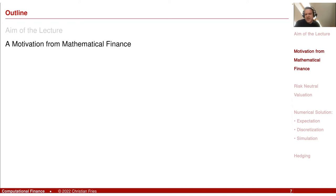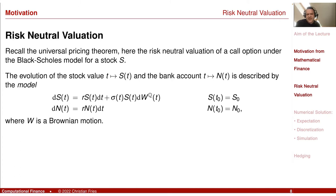Let me give a short motivation from mathematical finance. The lecture discusses numerical methods useful in other areas, but it's good to have some application in mind, because then you have an interpretation for these objects. The classical one is risk neutral valuation, sometimes called universal pricing theory. For example, consider a call option under the Black-Scholes model for a stock.